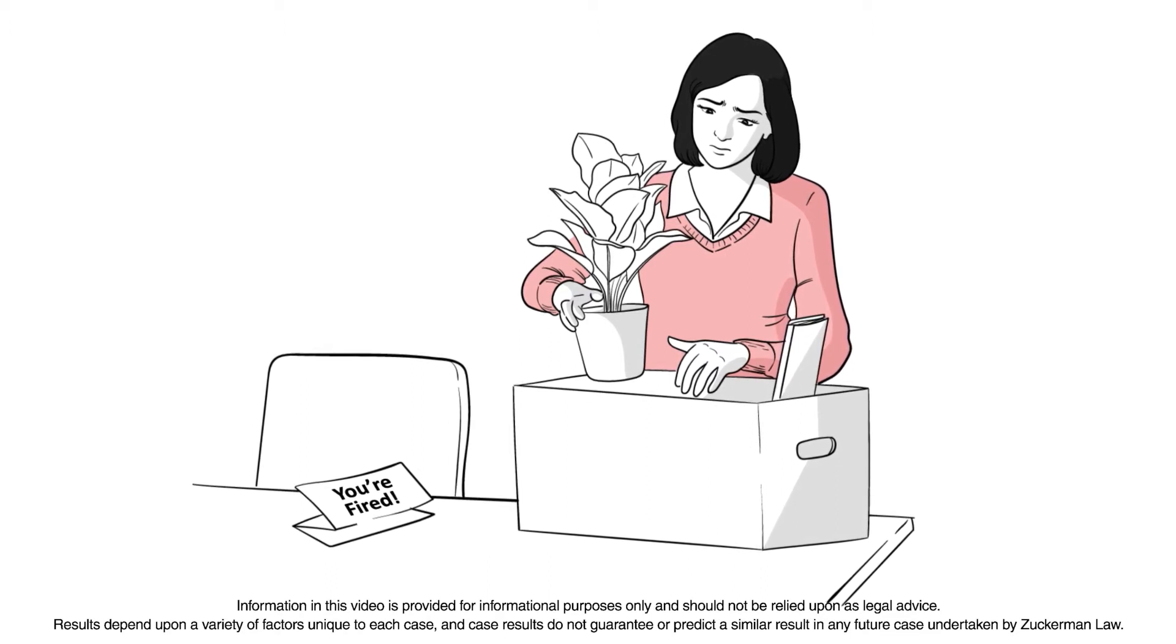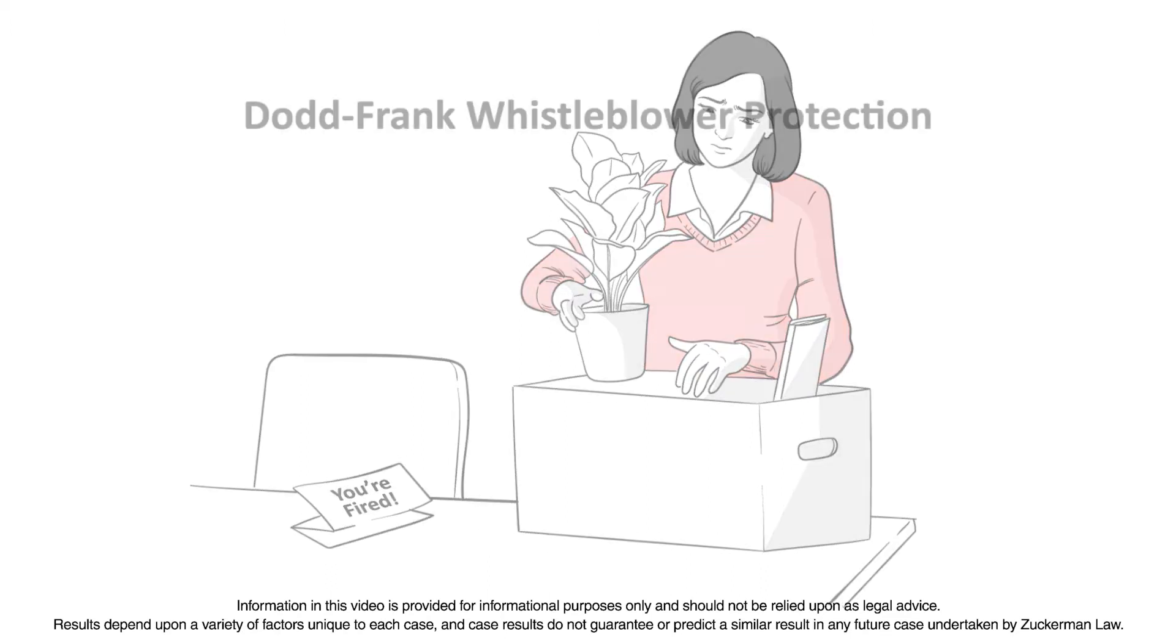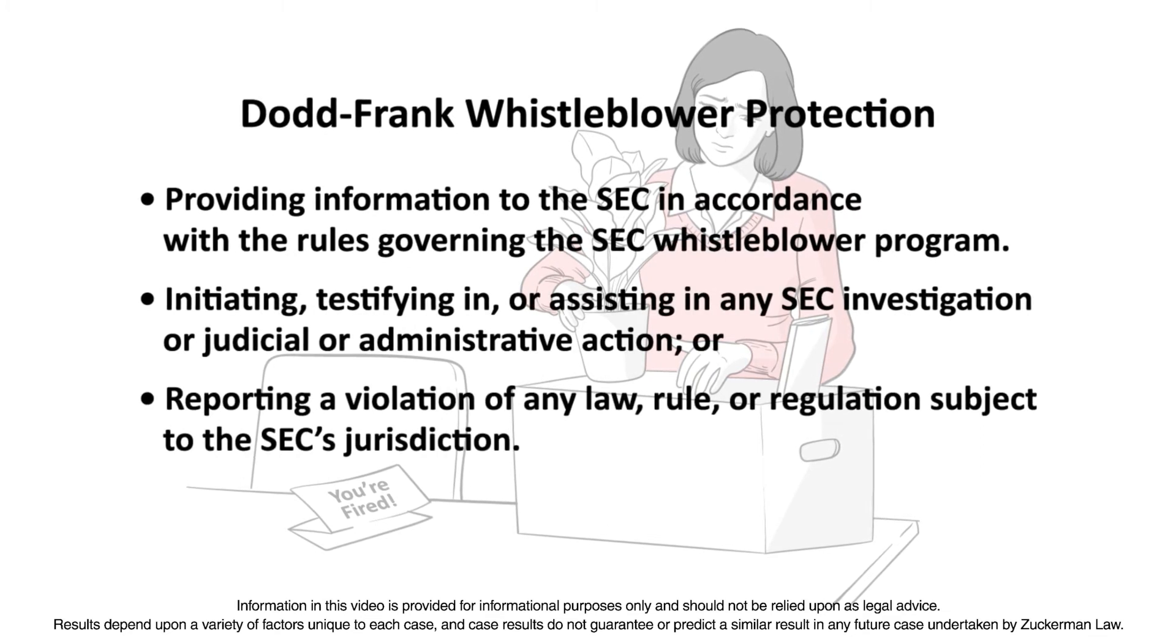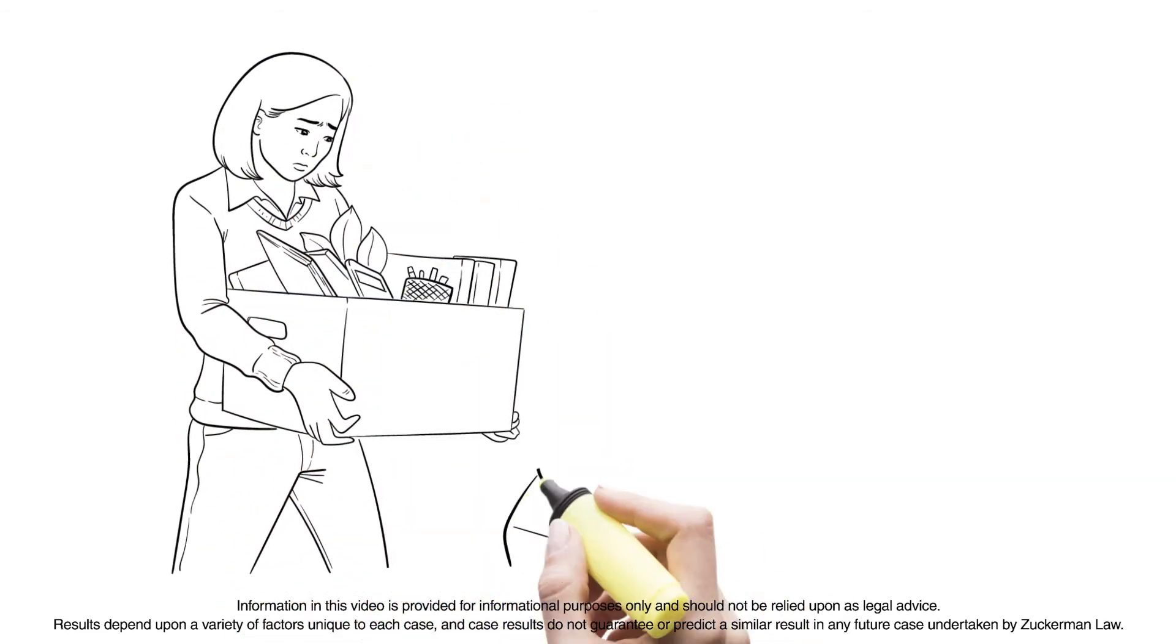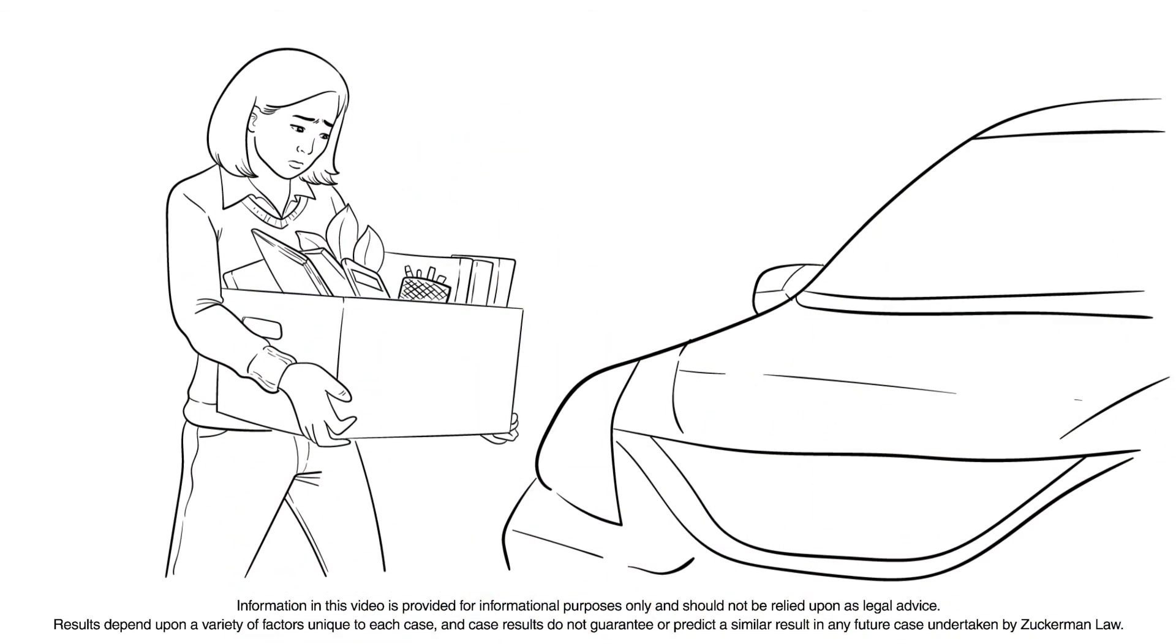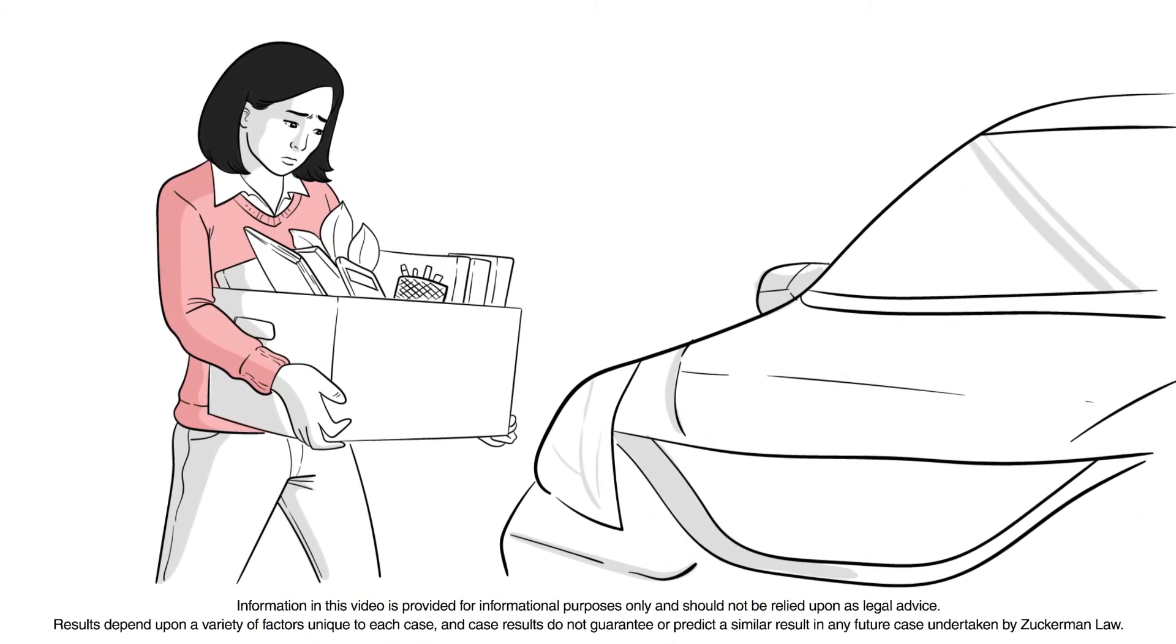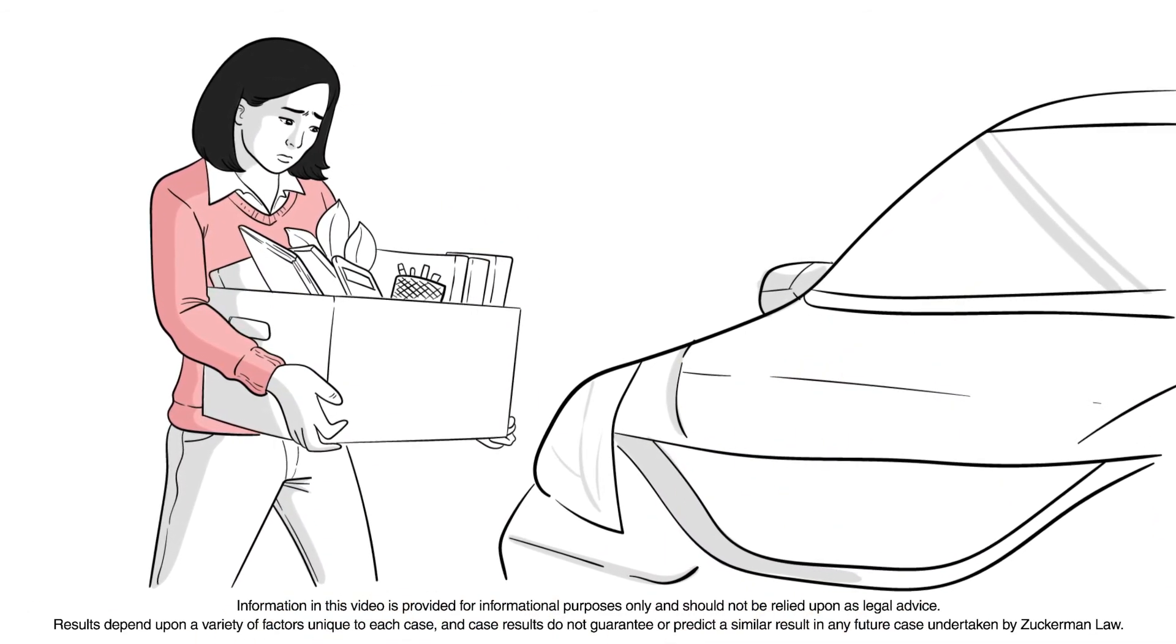The whistleblower protection provision of the Dodd-Frank Act protects a whistleblower for engaging in three protected activities. In contrast to SOX, the Dodd-Frank Act anti-retaliation provision protects an internal disclosure only where the whistleblower has reported a potential violation of federal securities law to the SEC.